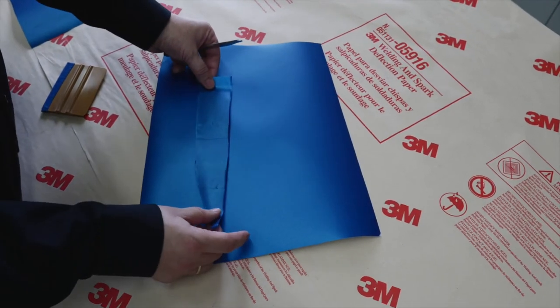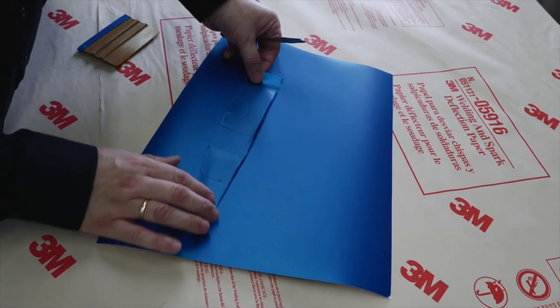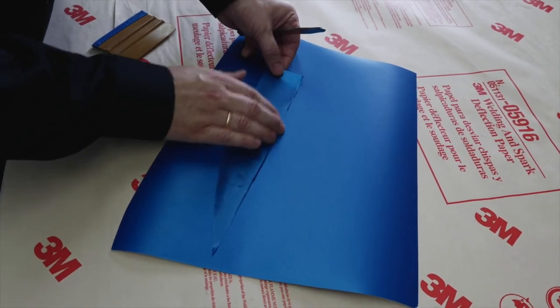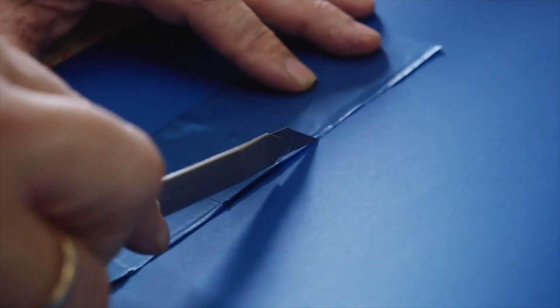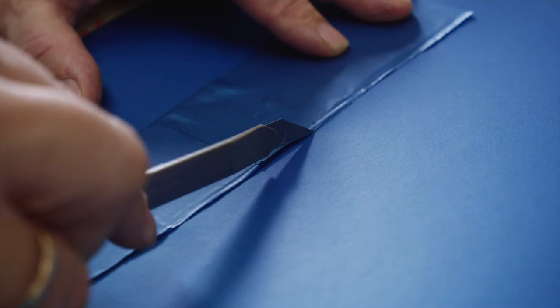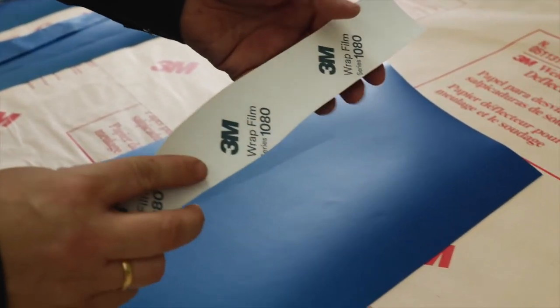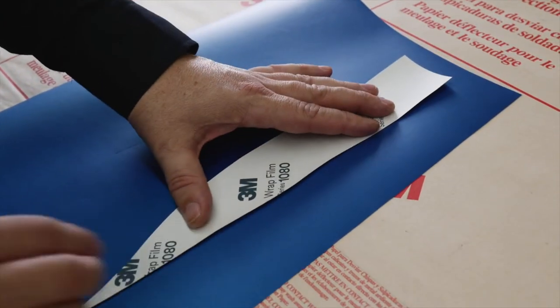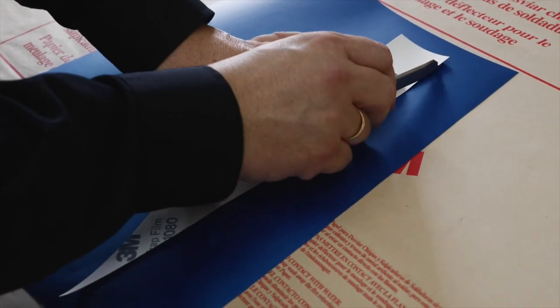Place the stencil on top of your chosen wrap film and cut to size. You can create the mirror image of the shape for the other side of the recess by flipping over the stencil and cutting to shape.